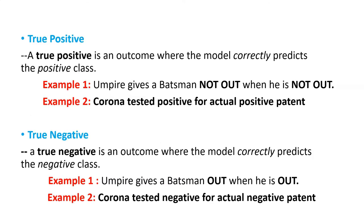A true positive is an outcome where the model correctly predicts the positive class. For a simple example using cricket: an umpire gives a batsman not out when he is really not out — that is a true positive. Similarly, another example: a corona test comes back positive for an actually positive patient — that is also a true positive.